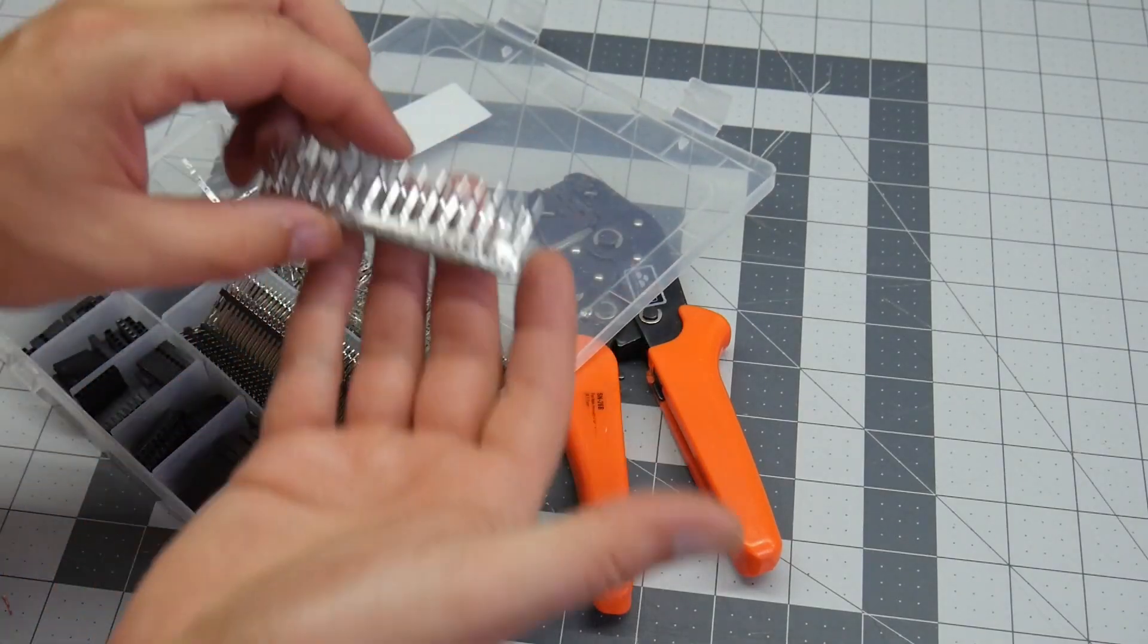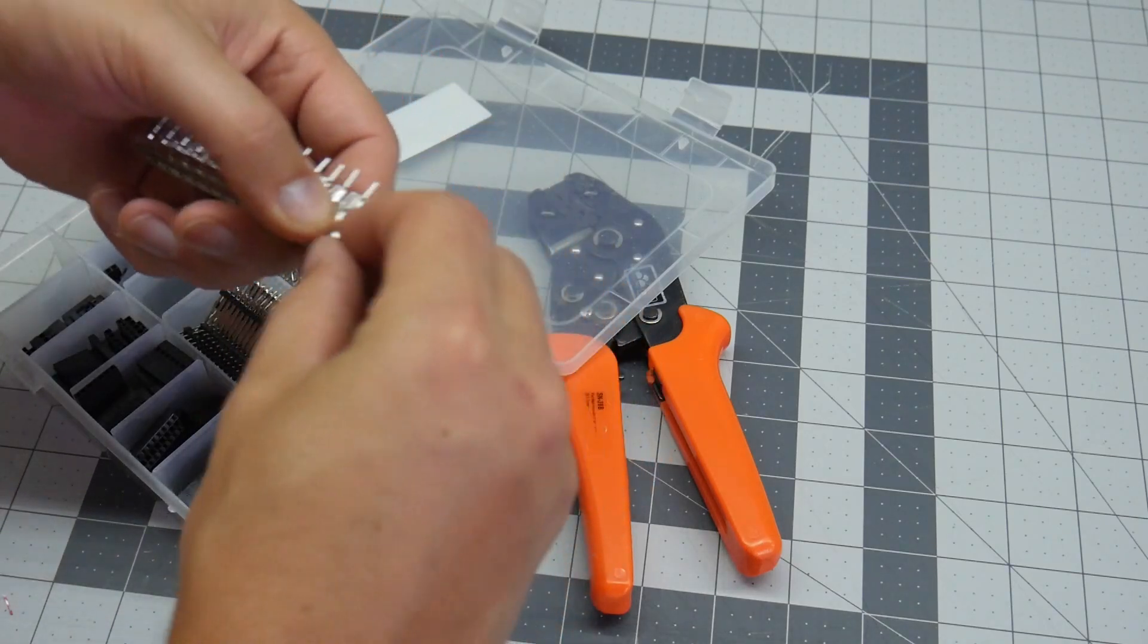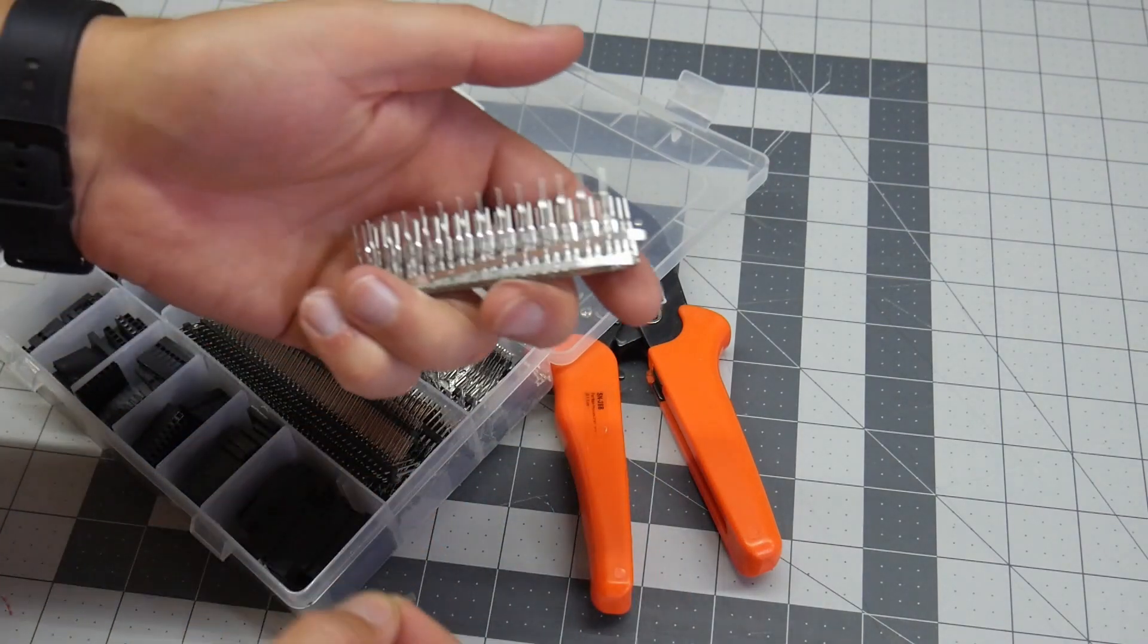In your kit, you're going to have a whole bunch of the connectors. You're going to peel one off, wiggle it back and forth, and it will come off of the strand.